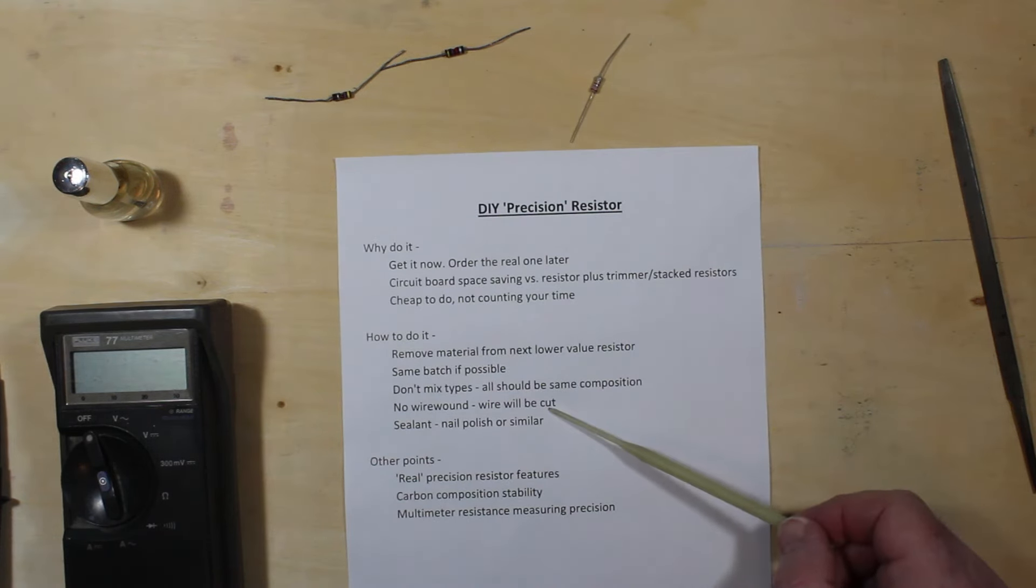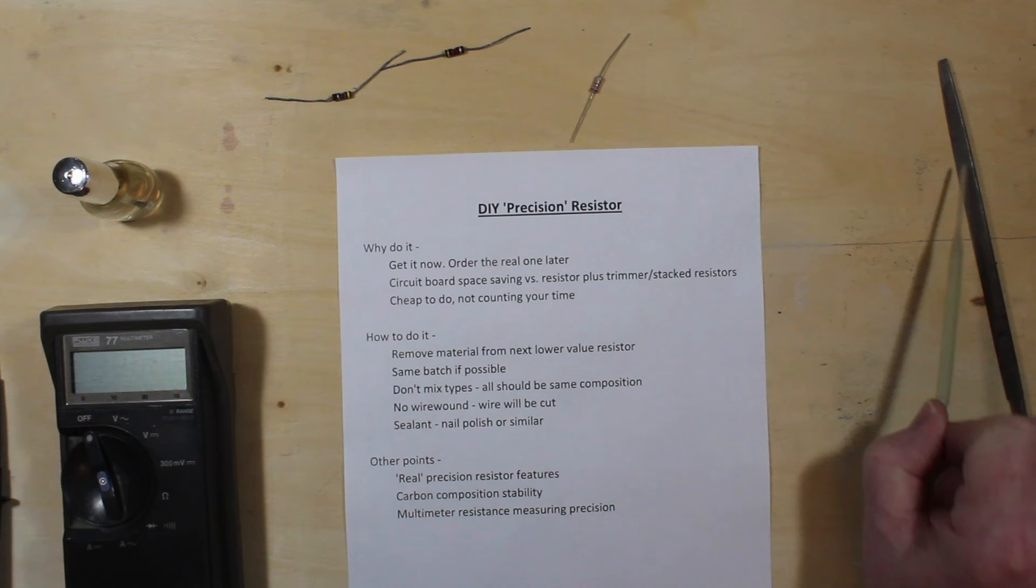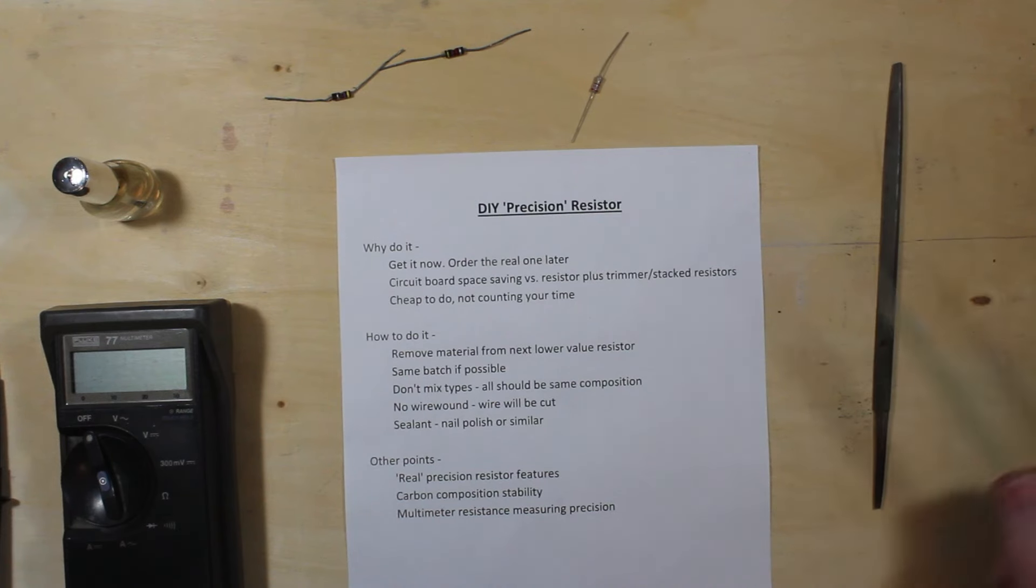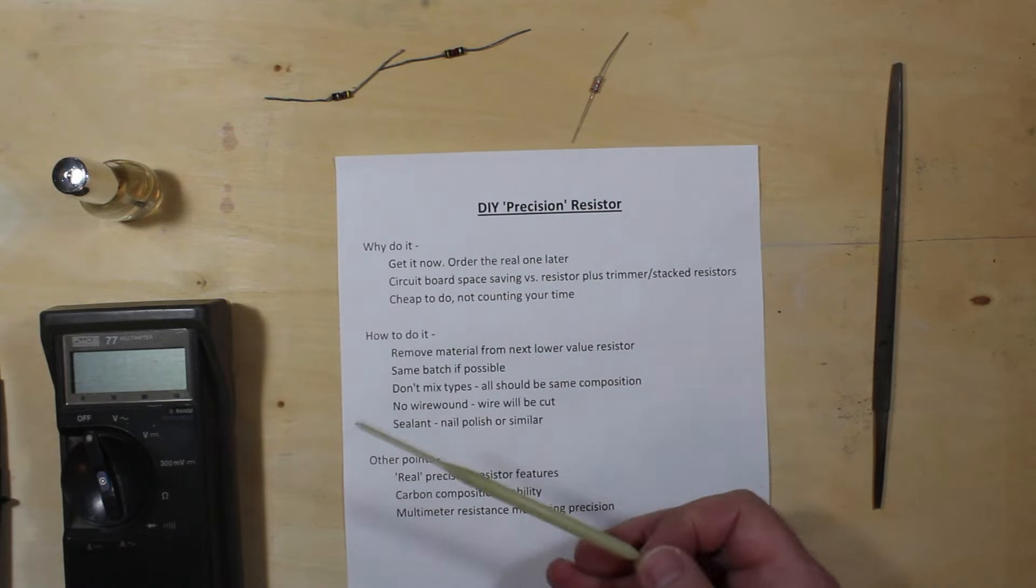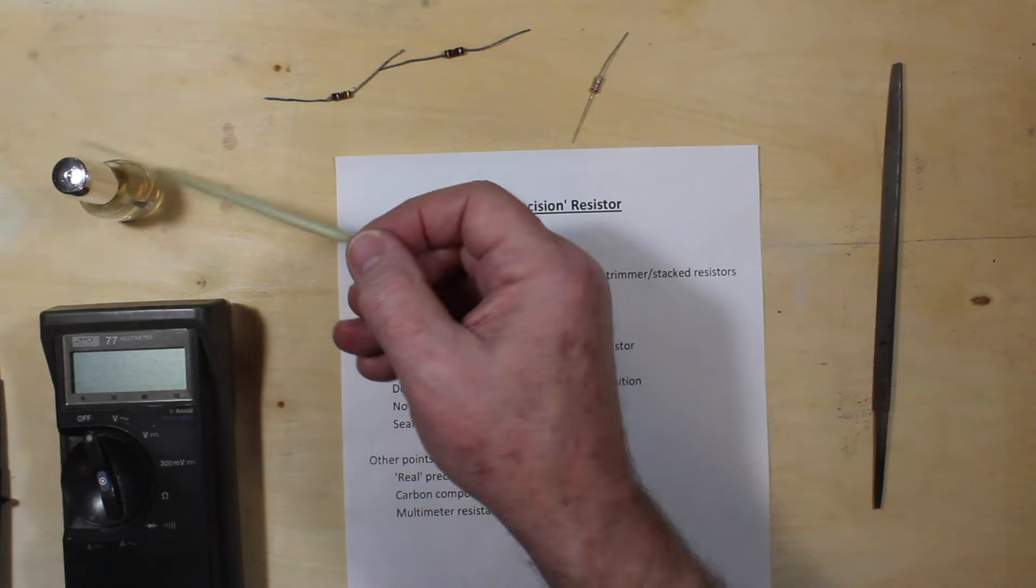No wire wound, obviously, because the wires, if you grind it with this file, you're going to cut through the wire and then put sealant of some sort across them. The nail polish is just cheap and easy and one of these will last you for a decade.